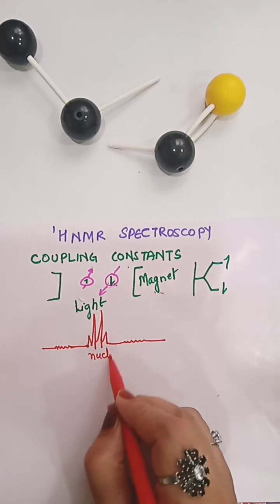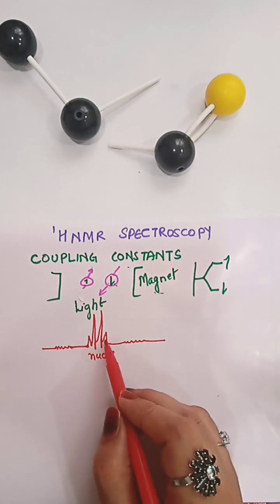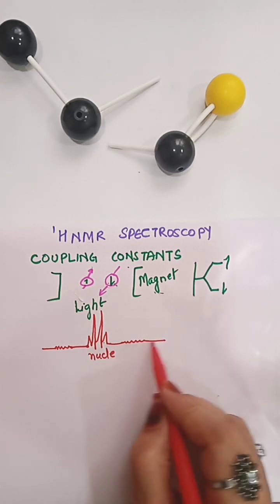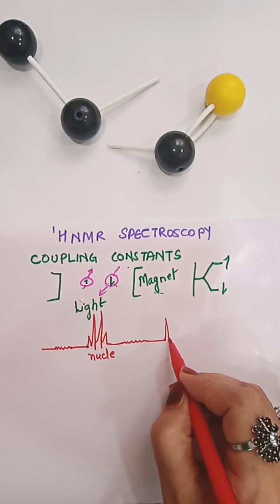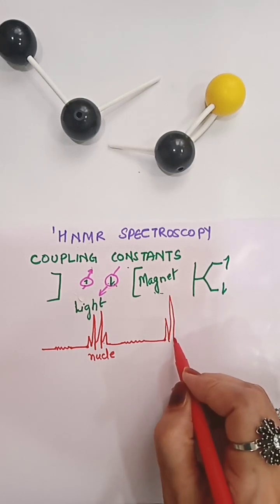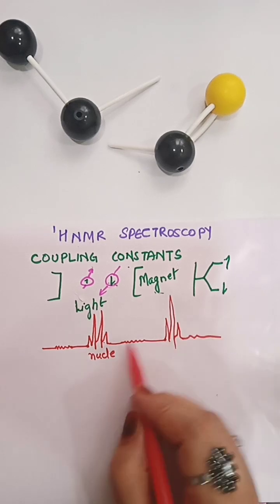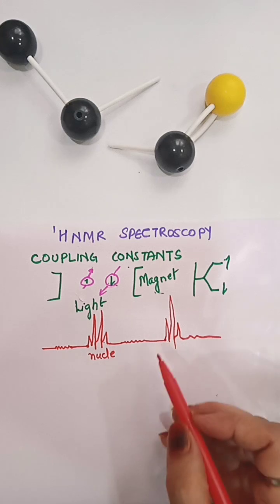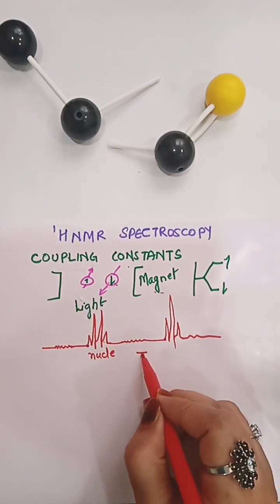Now this spacing, like this multiplet, after some space here, you'll be able to see another multiplet. It may be a triplet or it may be a quadruplet. So this spacing is known as coupling constant. It is designated as J.